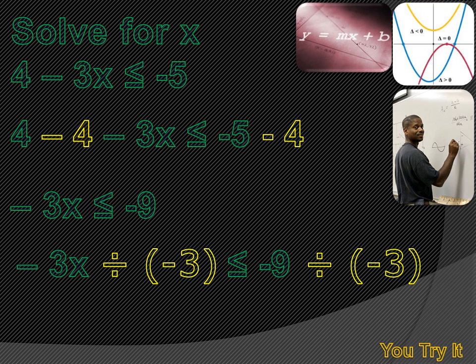Initially it reads minus 3x divided by minus 3 is less than or equal to minus 9 divided by minus 3. But turning the inequality sign around, it reads x is greater than or equal to 3.